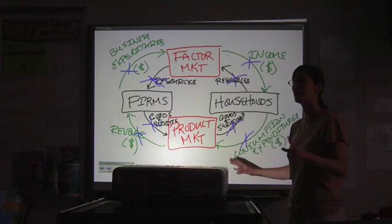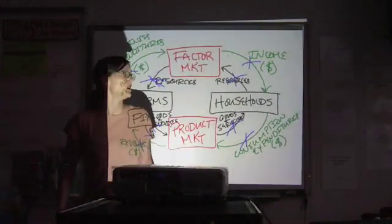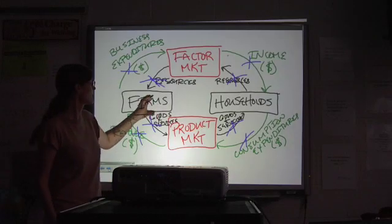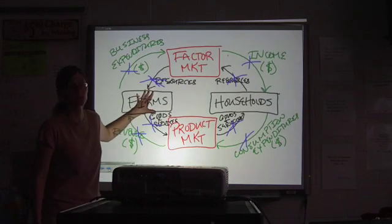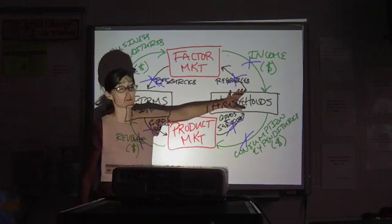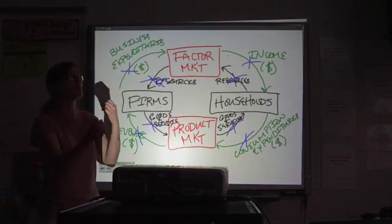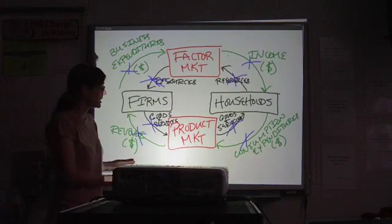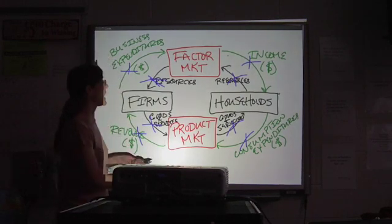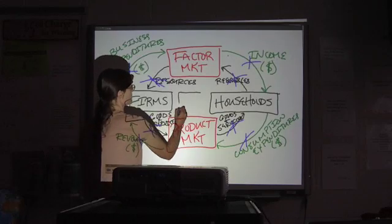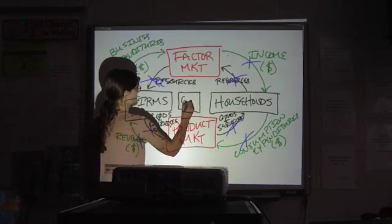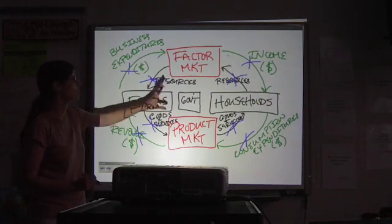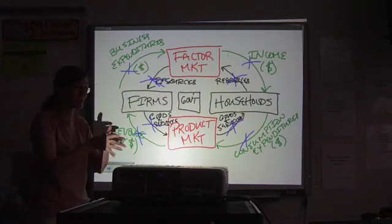It is a simplification and it does leave a couple of things out. All we've got here are firms interacting with households — we don't have firms interacting with other firms, and we don't have households interacting with other households. Those are pieces of the economy not represented here. In this diagram, we're leaving out the piece that usually goes right here in the middle, which is government. We'll add government later — we don't need to overcomplicate this to start with.